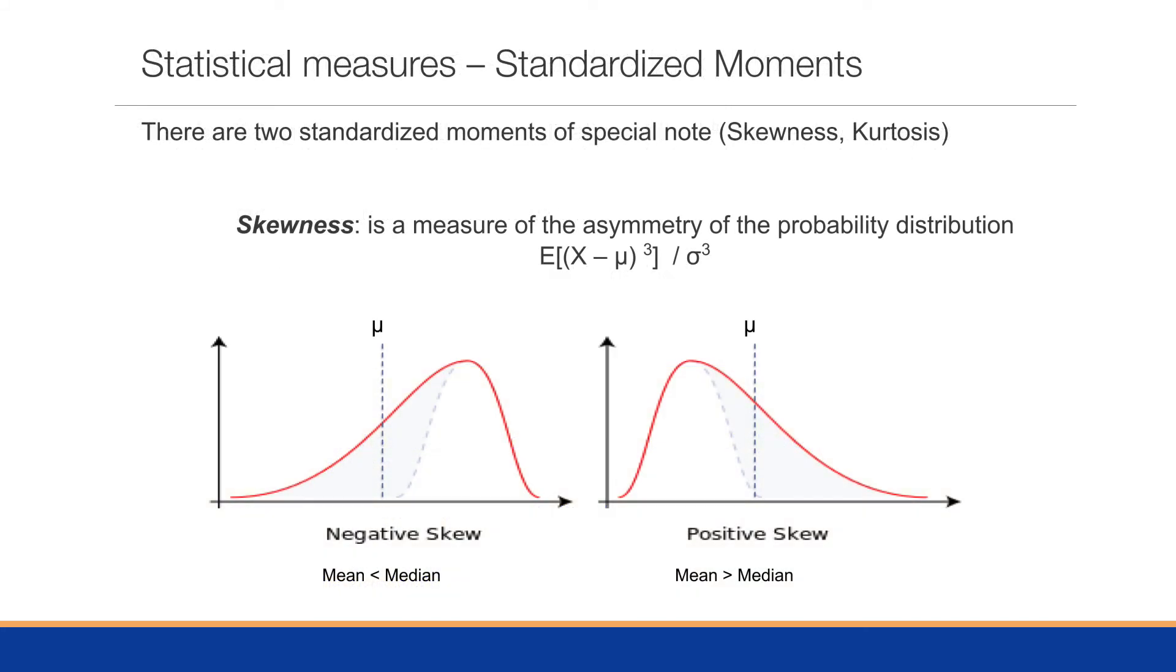The two standardized moments that are of special note are the skewness and the kurtosis. The skewness is a measure of the asymmetry of the probability distribution. And so therefore, we have the expected value of X minus mu to the third power divided by the standard deviation to the third power.